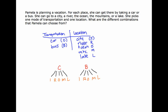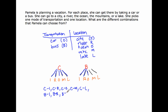Now I list those outcomes by connecting the branches: C-I, C-R, C-O, C-M, C-L, then B-I, B-R, B-O, B-M, and B-L. And I've listed all the possible outcomes.